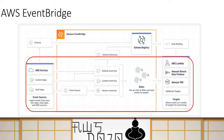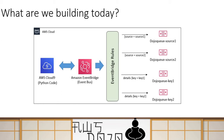So this is the part we are going to focus on today. What are we going to build? We will create one EventBus, and then one client — a Python code running in Cloud9 — which will publish messages to the EventBus. Then we will create certain rules: two rules will be source-based and two rules will be content-based. Source-based means based on the source of the event message, we will route it to two queues. If the source is source1, route to the source1 queue; if source2, route to the source2 queue. Then we'll create two content-based routing rules: based on certain content in the data, we will route it to one queue or another.